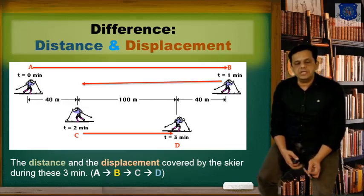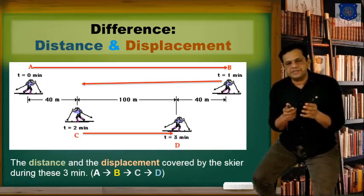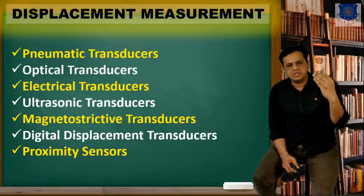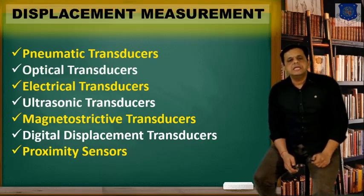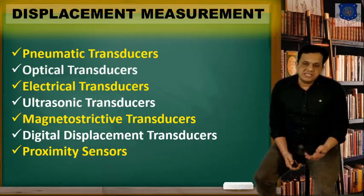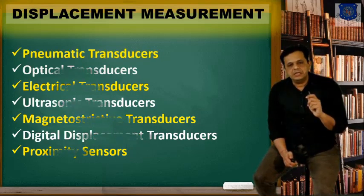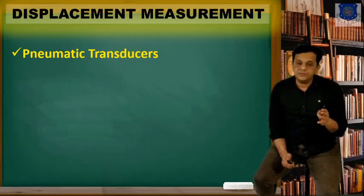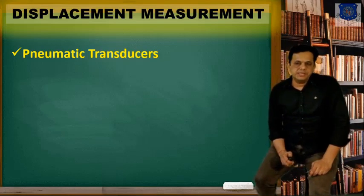So like this, we will be talking about displacement measurement. In practice, we always need to differentiate between distance and displacement. Displacement measurement can be done by various methods and sensors: pneumatic transducers, electrical transducers, ultrasonic transducers, magnetostrictive transducers, digital displacements, and proximity sensors. Today we will be talking about pneumatic transducers, and the rest will come in upcoming sessions. We will start with the flapper-nozzle assembly studied in the previous semester.